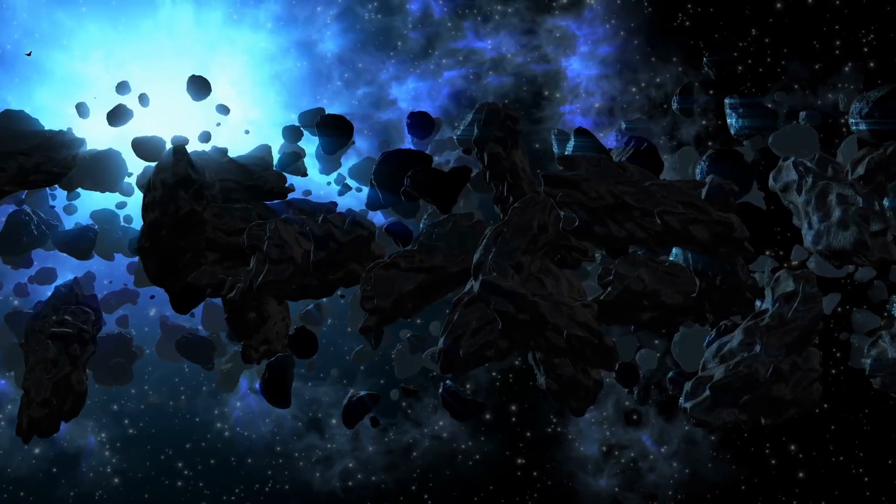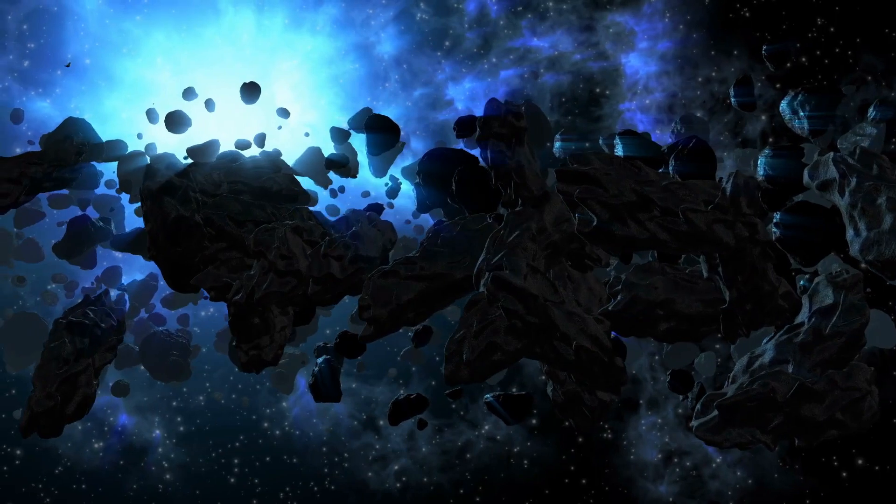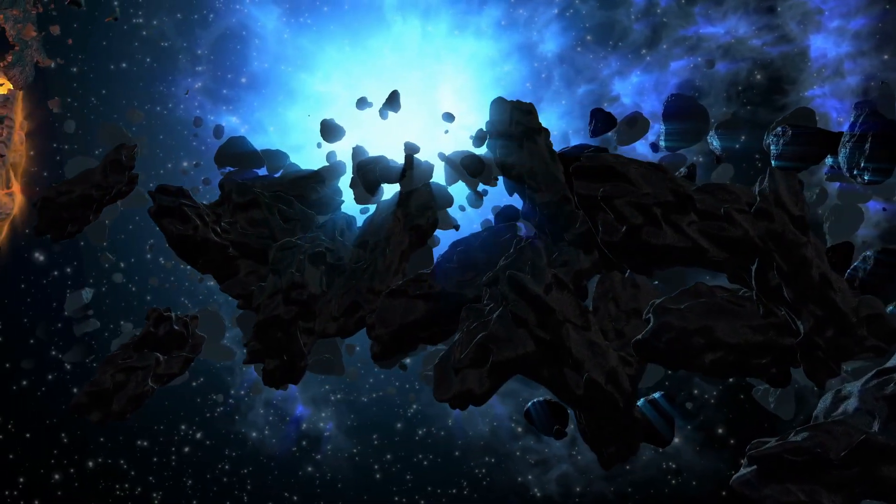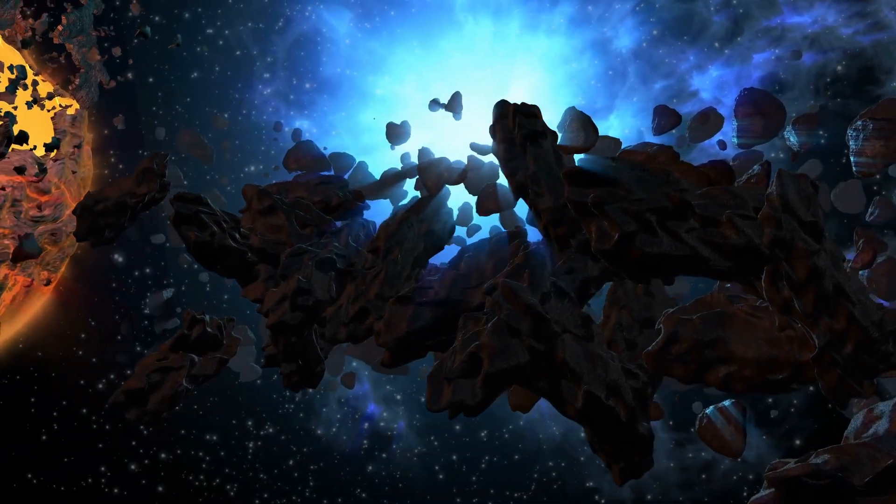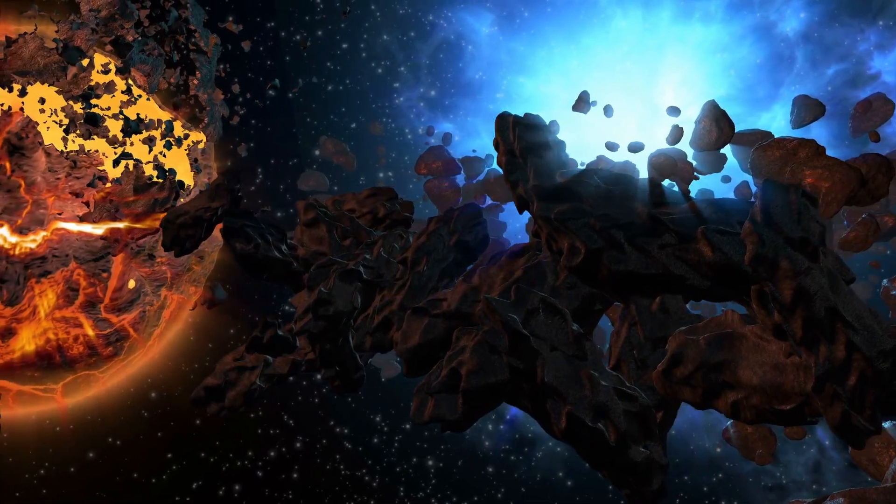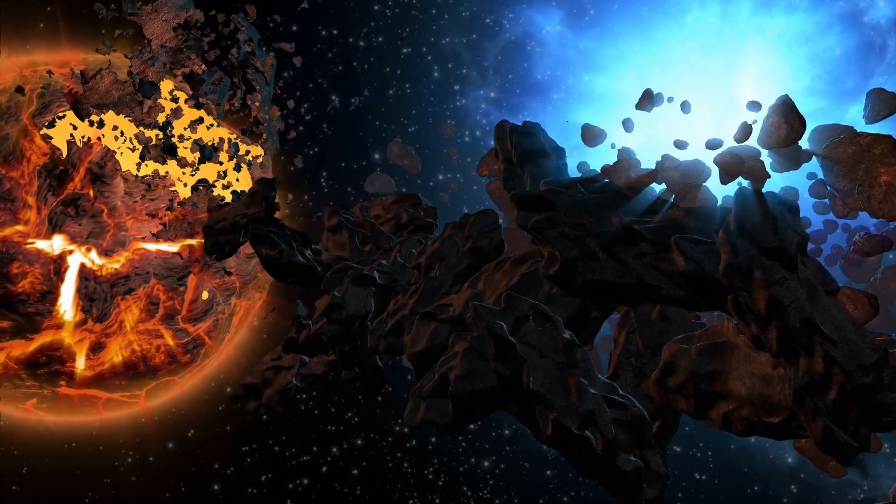The water in the asteroid belt holds secrets about the history of our solar system. Scientists can study the water molecules and figure out where they came from. By doing this, they can learn more about how our planet and other celestial bodies formed billions of years ago. It's like reading a cosmic history book.